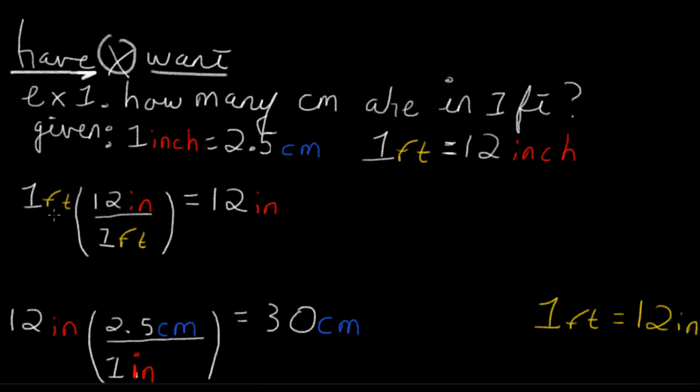So here we have one foot and we need to know how many centimeters are in there. Well we know that there's 2.5 centimeters in one inch so we'll start there since that's what we're given. So here is what we have and we'll multiply that by what we want. So we know there are 12 inches in one foot, the feet cancel out, you're left with inches, and you just multiply straight across.